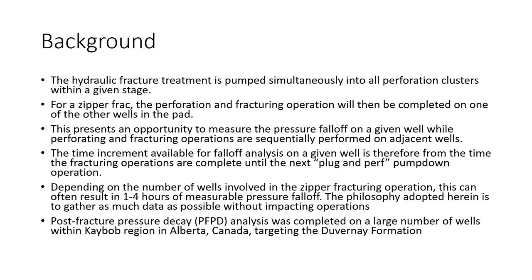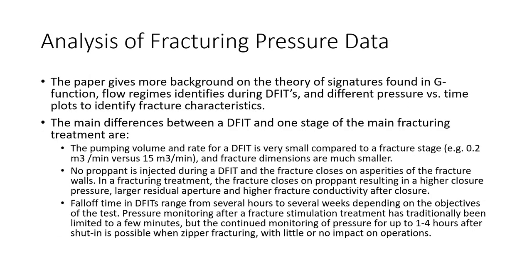The paper gives a lot of good background on the theory of signatures of the G function, flow regimes identified during DFIT, and different pressure versus time plots to identify frack characteristics. The main difference between a DFIT and one stage of the main frack treatment is that the pumping volume and rate for a DFIT is very small compared to a frack stage, frack dimensions are much smaller, no proppant is injected during a DFIT, and the frack closes on asperities of the fracture walls. In a frack treatment, the fracture closes on proppant, resulting in a higher closure pressure, larger residual aperture, and higher fracture conductivity after closure.